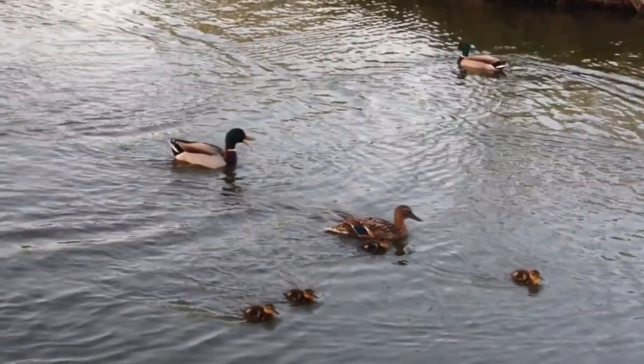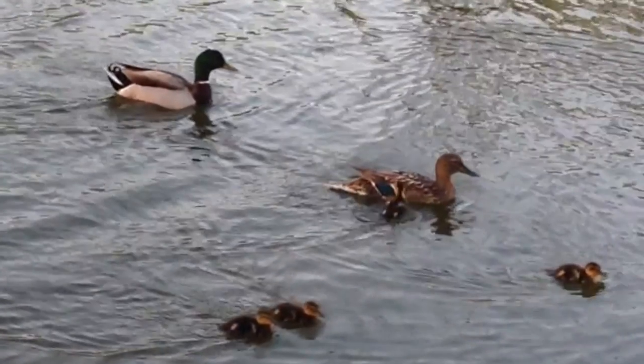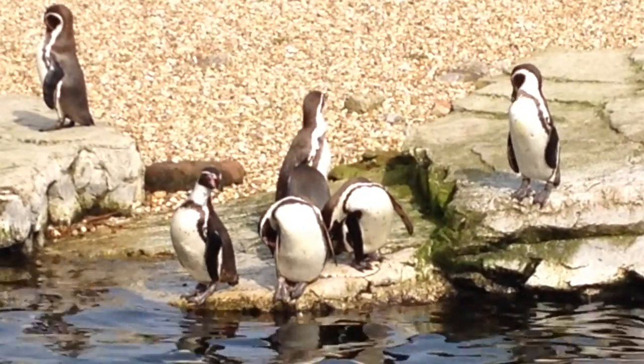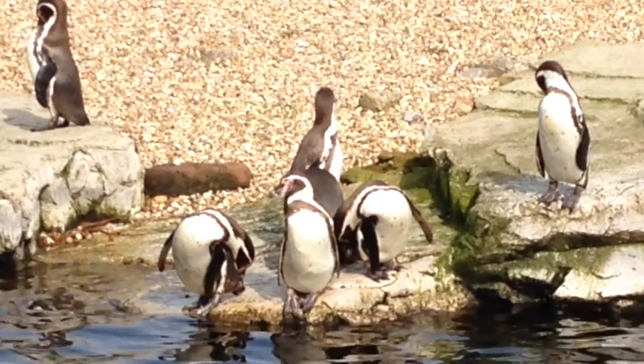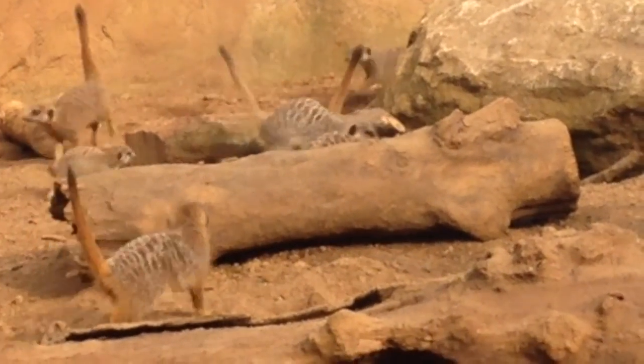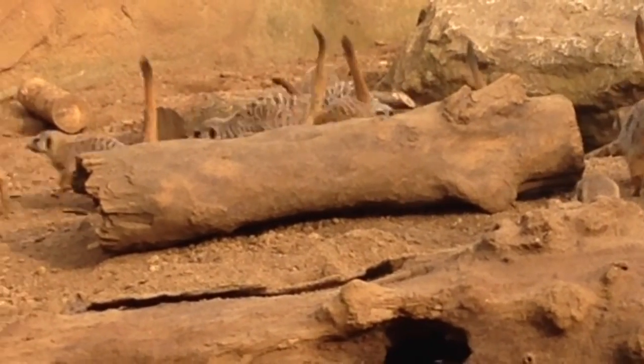In the last video, we covered kin selection theory and why animals sometimes choose to live with and help kin. The obvious issue we run into here is how do organisms recognise their kin. It is clearly of evolutionary benefit to be able to know who you're related to, so that you're able to ensure that some of your genes, and not someone else's, are passed on.